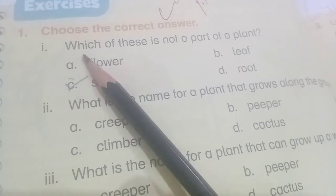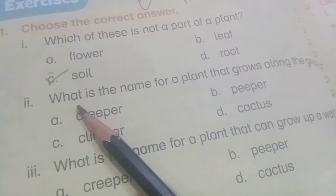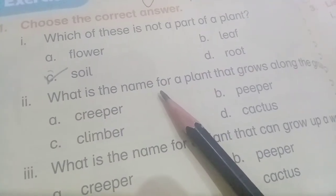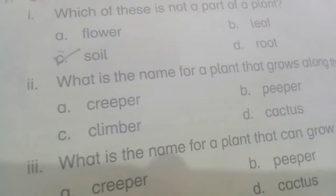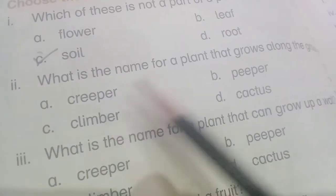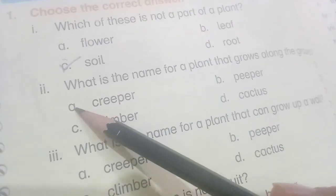Choose the correct answer. Which of these is not a part of a plant? Floor, leaf, soil, root. The answer is soil. What is the name for a plant that grows along the ground? Creeper, pepper, climber, cactus. The answer is creeper.